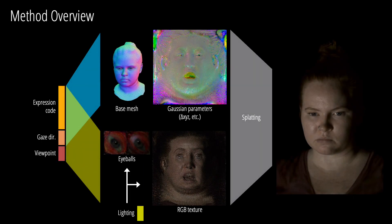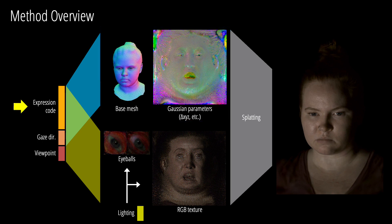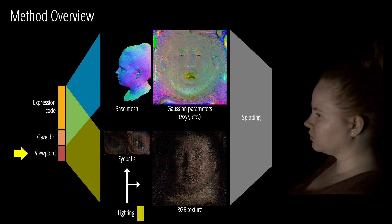We use an encoder-decoder-based architecture to train our model. We anchor 3D Gaussians on a coarse face mesh and decode the geometric and appearance properties as a UV map. We use a facial expression code to control geometry and view-independent appearance, with gaze direction control for the eyes. Specular parameters are additionally conditioned on the viewpoint.